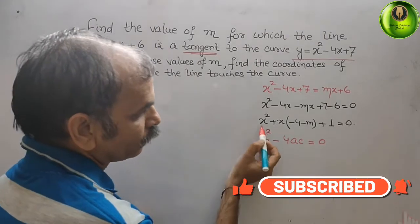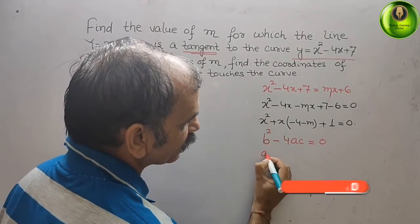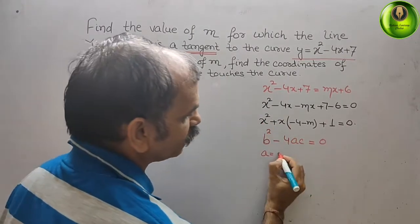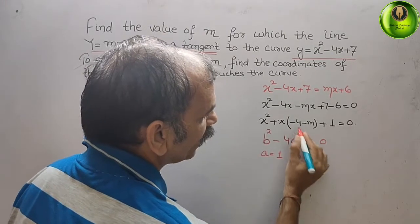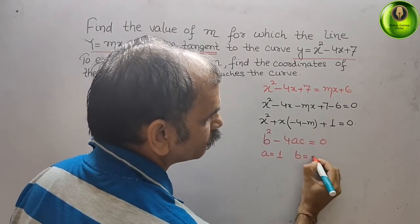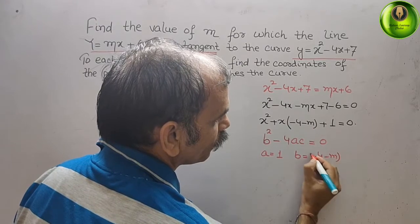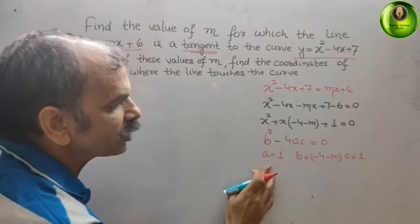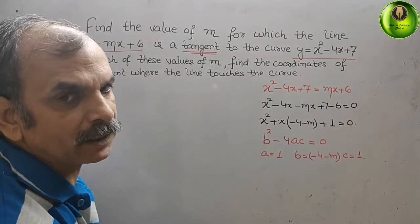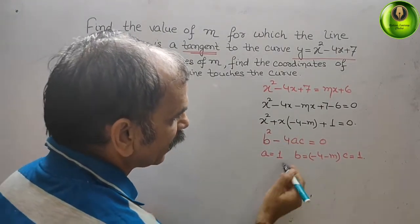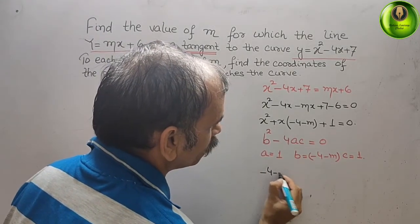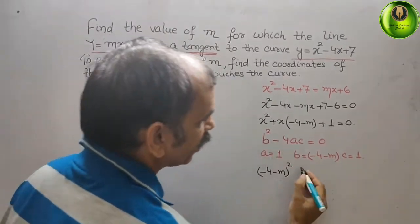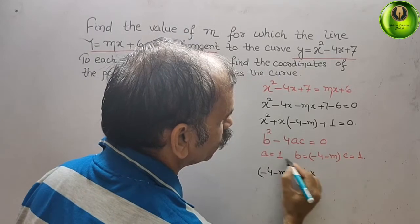Identifying the coefficients from x² + (-4 - m)x + 1 = 0: a = 1 (coefficient of x²), b = (-4 - m), and c = 1. Substituting into the discriminant: (-4 - m)² - 4 × 1 × 1 = 0.